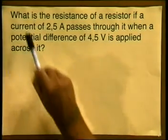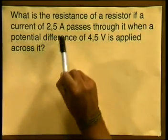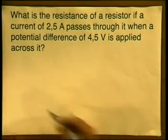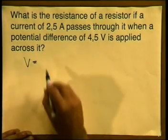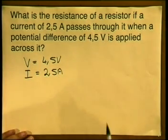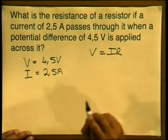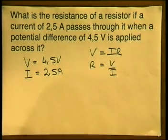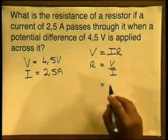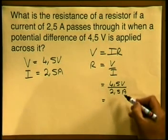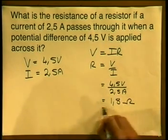Let's now tackle a few problems using the Ohm's Law equation. What is the resistance of a resistor if a current of 2.5 amperes passes through it when a potential difference of 4.5 volts is applied across it? We write down: V = 4.5 volts, I = 2.5 amperes. Using V = I × R, rearranging to calculate R gives R = V over I. Substituting in: 4.5 divided by 2.5 gives us a value of 1.8 ohms.